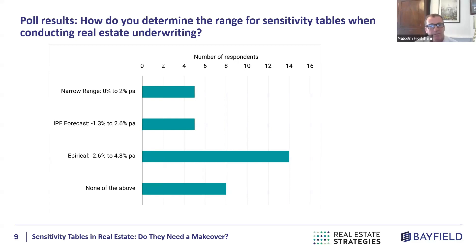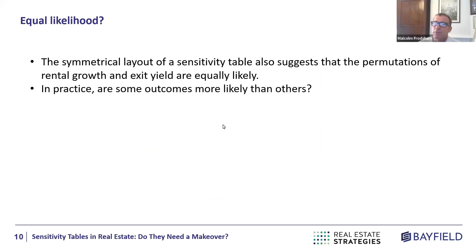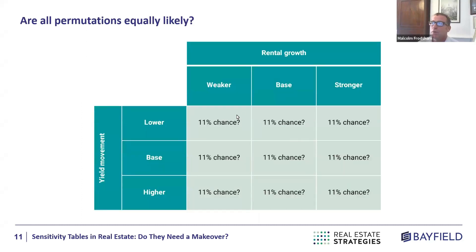There is another issue with sensitivity tables: they are symmetrical, based around a rectangular shape. What that implies is that all permutations of rental growth and exit yields are of equal likelihood. With a three-by-three matrix, that would imply each box has an 11.1% chance — nine times 11.1% equals 100%. But is that correct? Are all these outcomes actually equally likely?